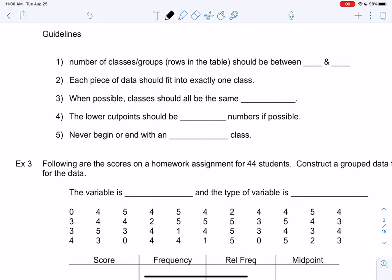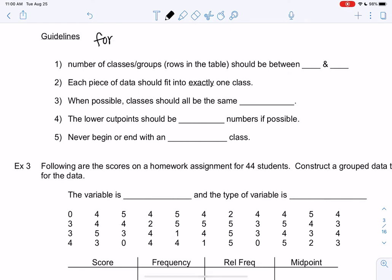All right, let's look at some guidelines for these group data tables and then we can do two more examples. So number of classes or groups, those are the rows of the table, should be between 5 and 10. Sometimes we go up to 20, but 5 to 10 is better.